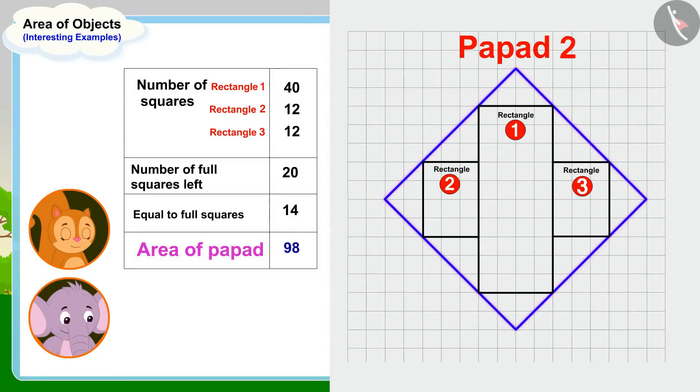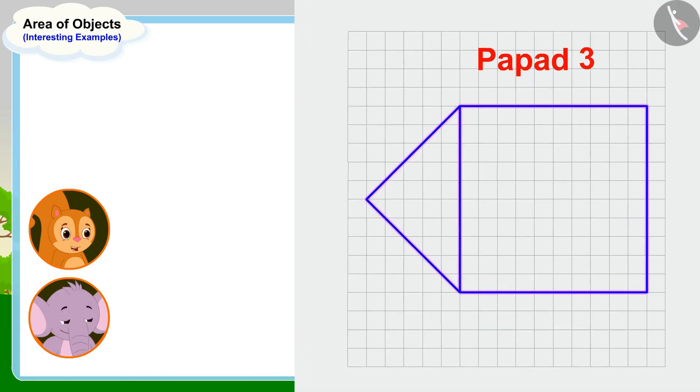Appu, the area of this popper is 98 square centimeters, Chanda said excitedly. Now all we have to do is find out the area of this last popper, and then we will know which of these poppers is the largest, Chanda told Appu.